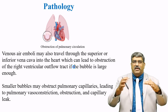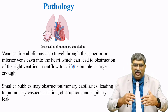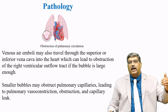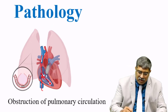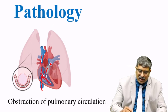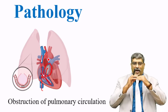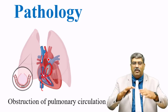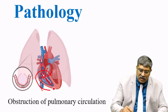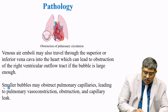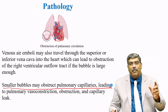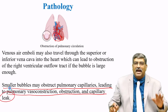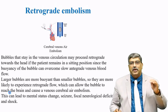What happens when the venous air embolism gets into the right atrium through the superior and inferior vena cava? It passes via the tricuspid valve into the right ventricle. From the right ventricle, it goes and obstructs the pulmonary artery. If the right ventricle is obstructed, your pulmonary blood flow will be altered and there is going to be right ventricular dysfunction. Smaller bubbles may also obstruct pulmonary capillaries, leading to pulmonary vasoconstriction, obstruction, and capillary leak.